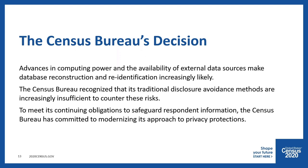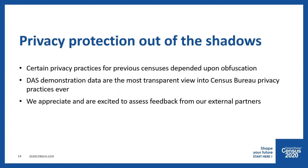We determined that current computing capability and current software made database reconstruction and resulting record linkage re-identification attacks feasible and harmful using the existing disclosure avoidance technologies — primarily the swapping technology used in 2010, 2000, and 1990. Essentially, the traditional disclosure avoidance methods are insufficient to counter these risks. The mitigation is to move to modern algorithmically-based systems to provide the confidentiality protection, and to do it on the 2020 Census.